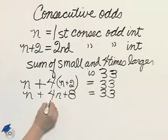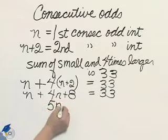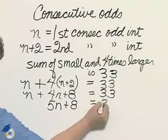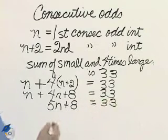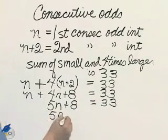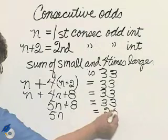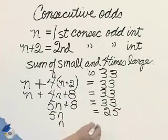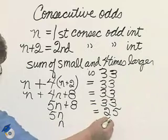Collect like terms. 5n plus 8 is 33. Subtract 8. 5n equals 25. Divide by 5. n equals 5.